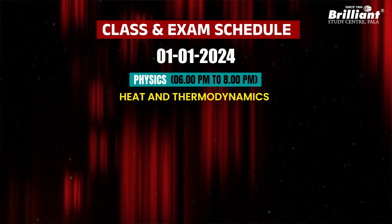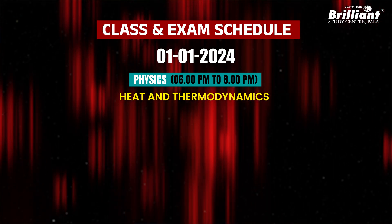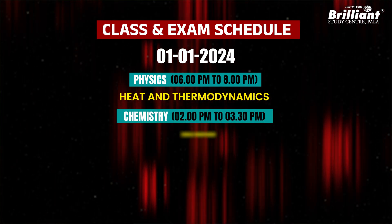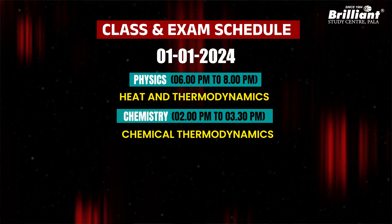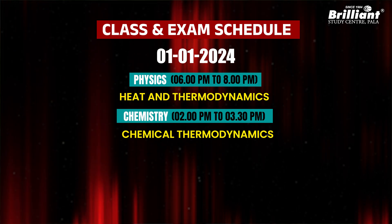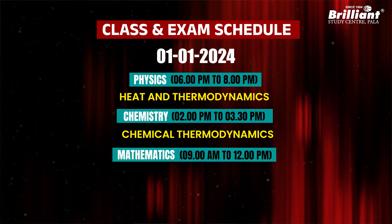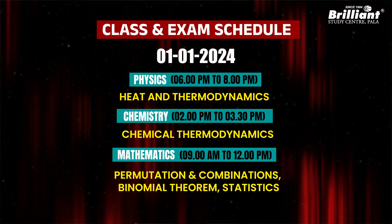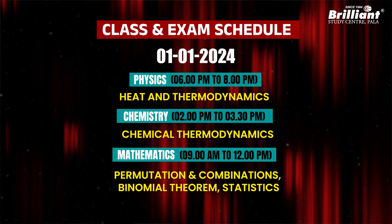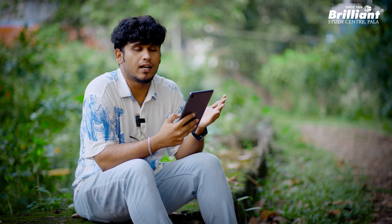To begin Unit 3, the next class in Physics will cover Heat and Thermodynamics. Unit 3 Chemistry covers Chemical Thermodynamics. Mathematics covers Permutation and Combinations, Binomial Theorem, and Statistics. These are the three topics you will have in your Unit 3 live class.